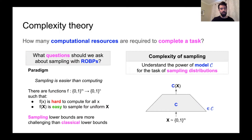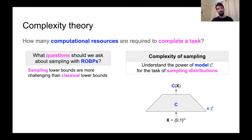There are also explicit examples for AC0 circuits, and in our work we show an explicit example for ROBPs. Because of this, sampling lower bounds are actually strictly harder to prove than classical lower bounds. Hence, in order to pursue sampling lower bounds, we'll need new techniques, and it might be the case that there are surprising applications — and we will see that that is actually true.